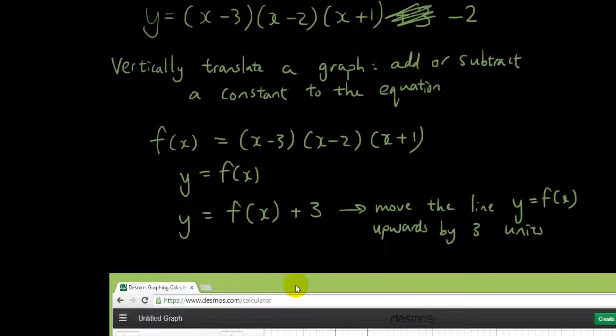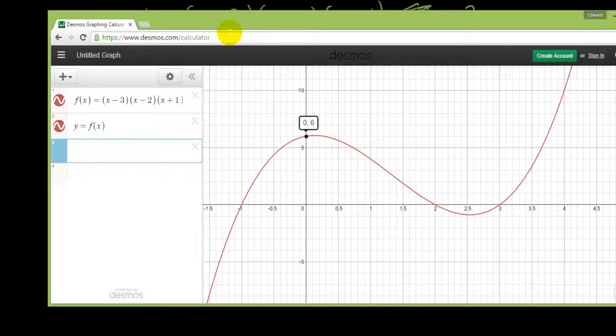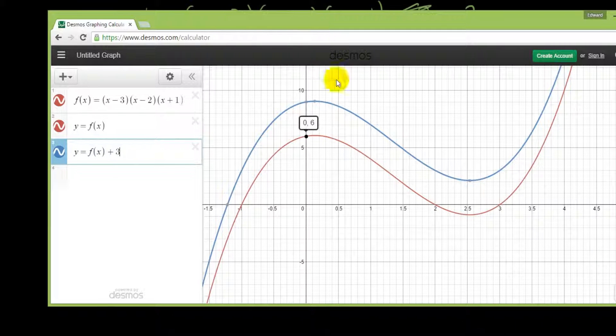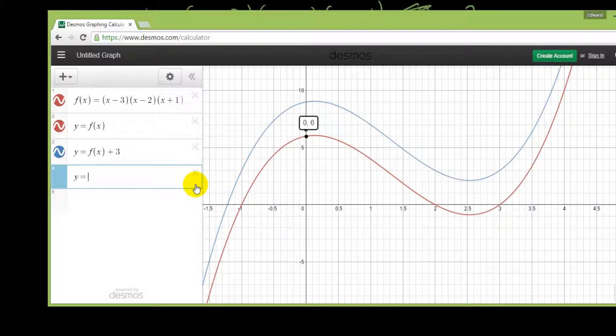But if I put in y equals f of x plus 3, right, the whole line gets moved up. And if I put in here y equals f of x minus 2, the whole line gets moved down.